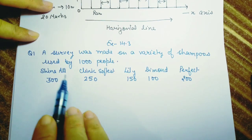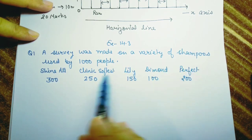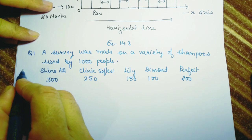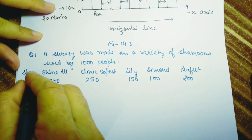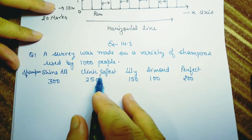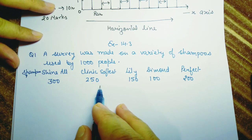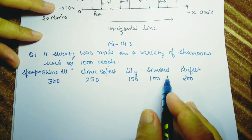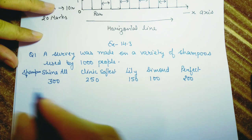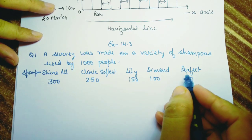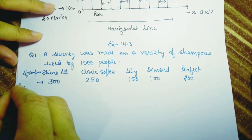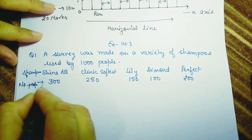The first question: a survey was made on a variety of shampoos used by 1000 people. Shine All is used by 300 people, Clinic Soft is used by 250, Lilly 150, Diamond 100, and Perfect 200. The brand names are on one axis and the number of people on the other.